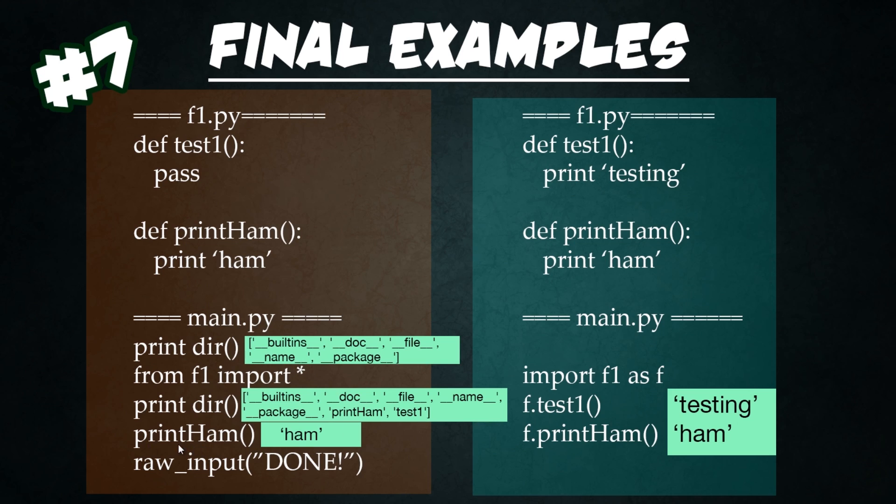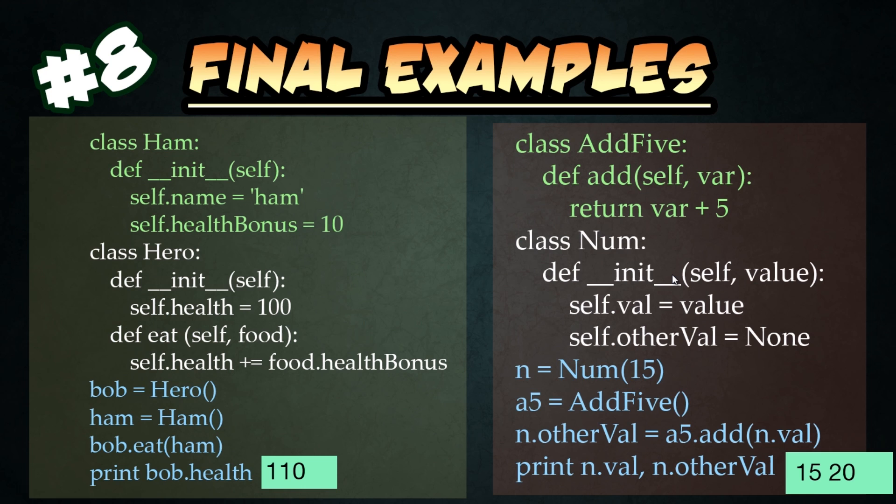Instead, we can just call them as they are. And so we call the function print him, which is declared in the other file and it works just fine. On the right hand side, we're actually just importing it using a different method of import blank as f and we're saying using that f to access those functions instead. So on the left side, we imported it with star, which allowed us to access the functions directly. And on the right, we imported it as a module, which we could access the functions with a dot in between the function name.